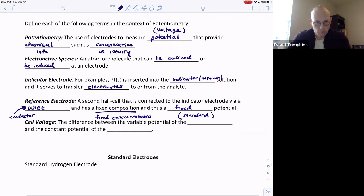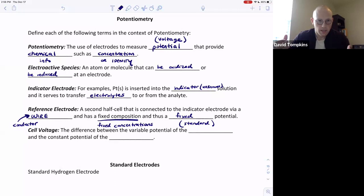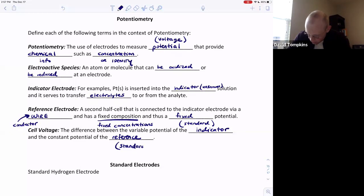Once you create this voltaic cell with two half cells, indicator and reference, there will be a cell voltage or potential between the two. The difference between the variable potential of the indicator or the unknown solution and the constant potential of the reference or the standard is going to tell us something about the concentration and the identity of what's in the indicator solution.